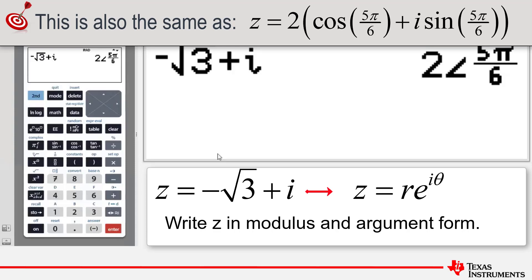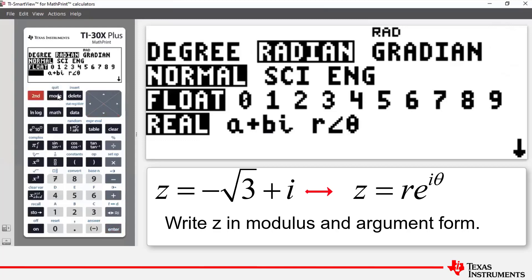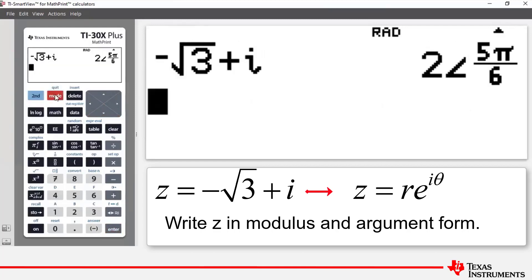Now what we're going to do is we're going to change the mode and we're going to go back into real mode. So we highlight real and press enter. Second mode to quit and go back to the home screen.